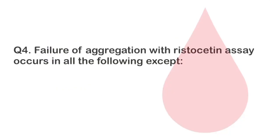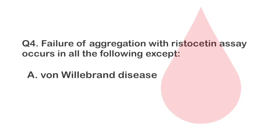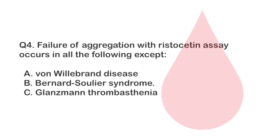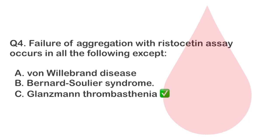Failure of aggregation with Ristocetin occurs in all of the following except option A, Von Willebrand disease. Option B, Bernard-Soulier syndrome. Option C, Glanzmann thrombasthenia. The correct answer is Glanzmann thrombasthenia.